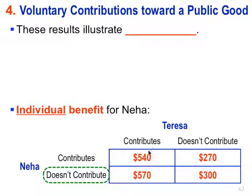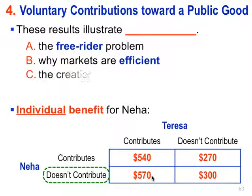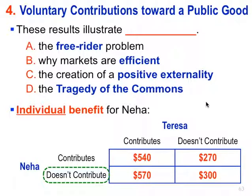Yet together, they maximize their combined benefit if they both contributed. These results illustrate the free rider problem. Remember what we just saw: individually it's always best not to contribute, but collectively the best outcome is if both contribute — just like our public goods game in class, where we could all do best overall if everybody put all their points into the public pool, but individually it's always in your best interest to keep everything for yourself. You benefit from the public good whether or not you contribute. That is the free rider problem.